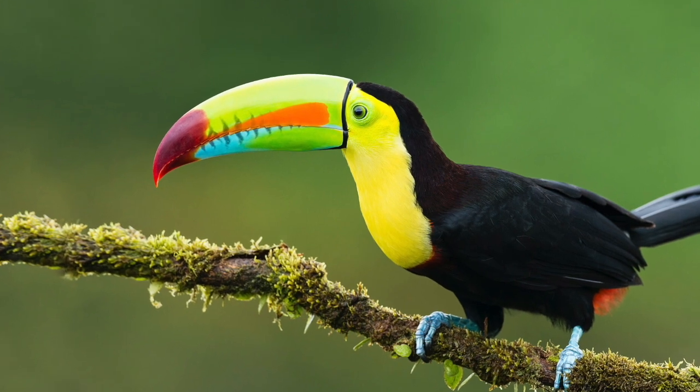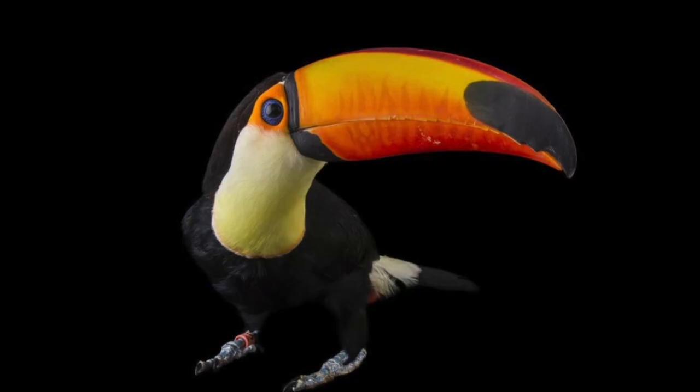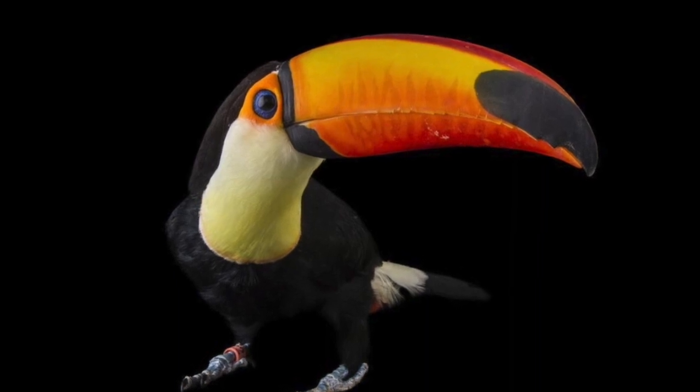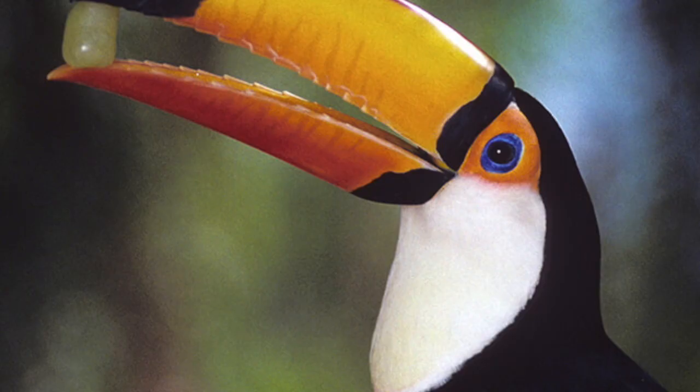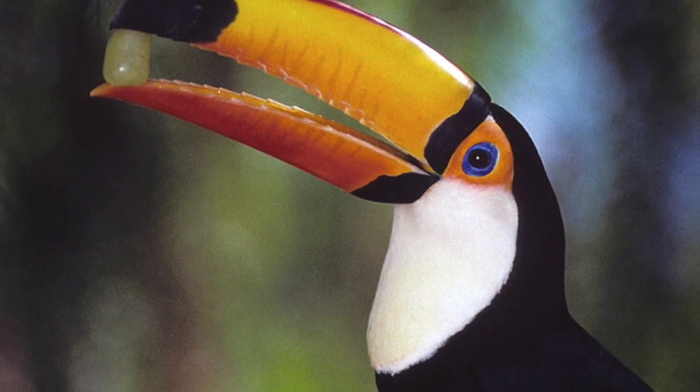These birds are usually found in the canopy layer and their coloring allows them to camouflage well there. They are known for their bill or beak which takes up half of their body length. They use their bill for reaching fruit on faraway branches or scaring off predators.